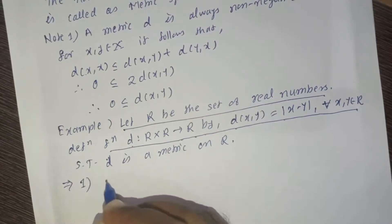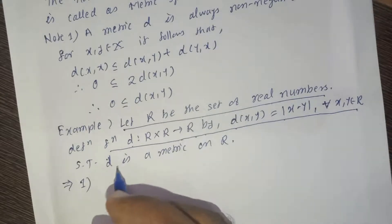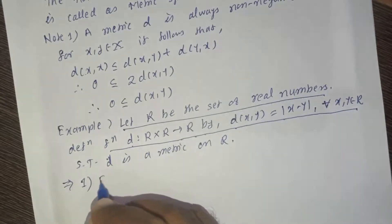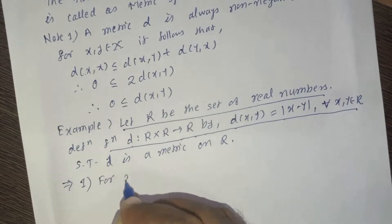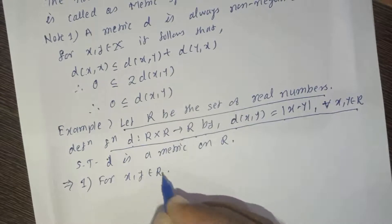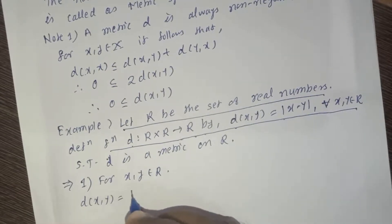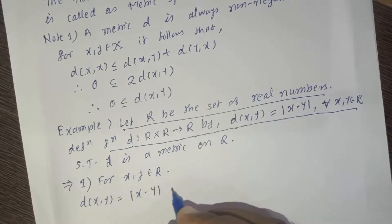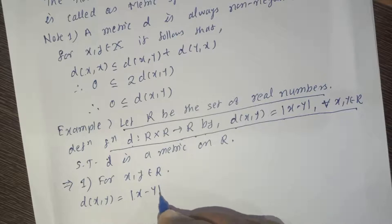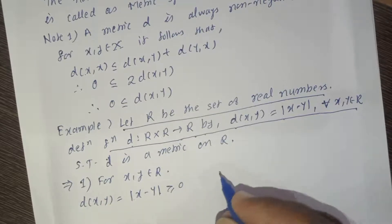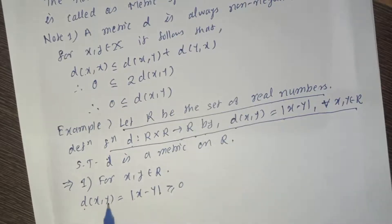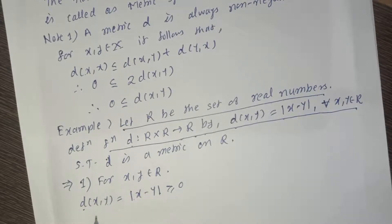Solution: given that R is the set of real numbers and D of XY equals absolute value of X minus Y. First property — non-negativity: for X, Y belonging to R, D of XY equals the absolute value of X minus Y by definition of D. The absolute value of any real number is always greater than or equal to 0, and therefore D of XY is greater than or equal to 0. So it satisfies the non-negativity property.